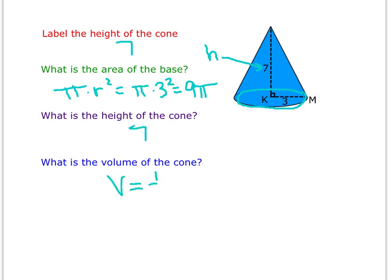So when we find the volume of the cone, it's going to be one-third times the area of the base times the height of the cone. So in this case, the area of the base, remember we found, was 9 pi. And the height of the cone is 7. So if you multiply 9 times 7, you get 63. Divide that by 3, you get 21 pi. And that would be cubic units.